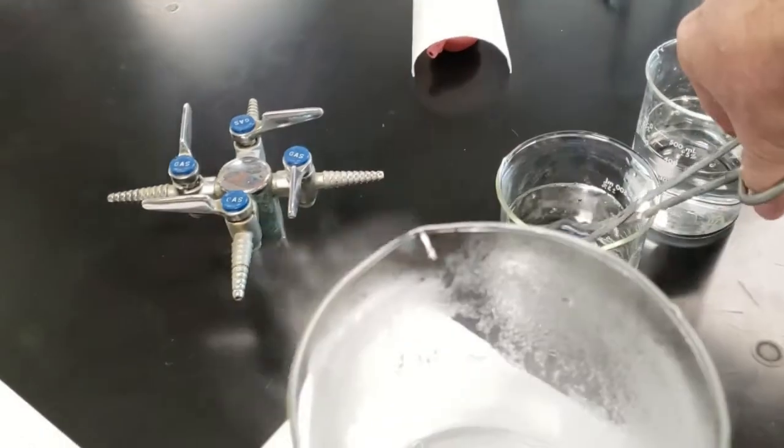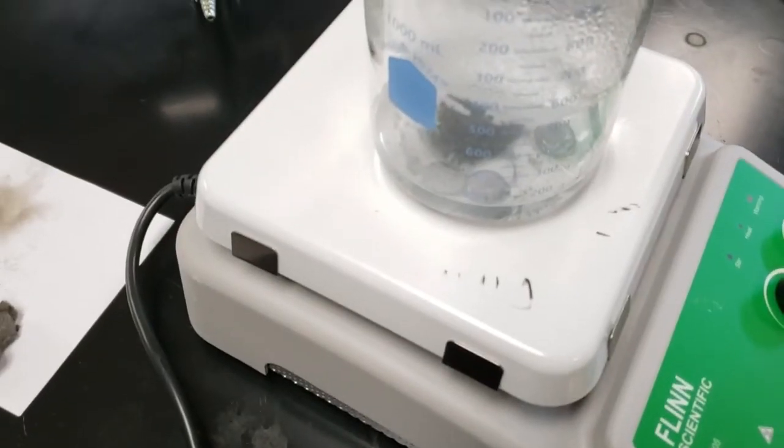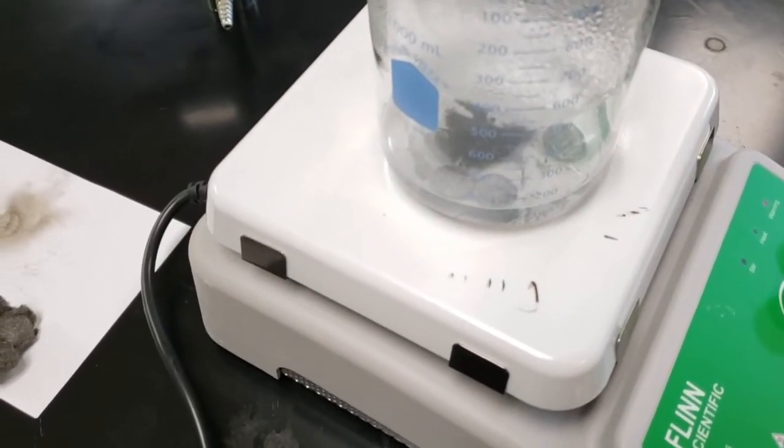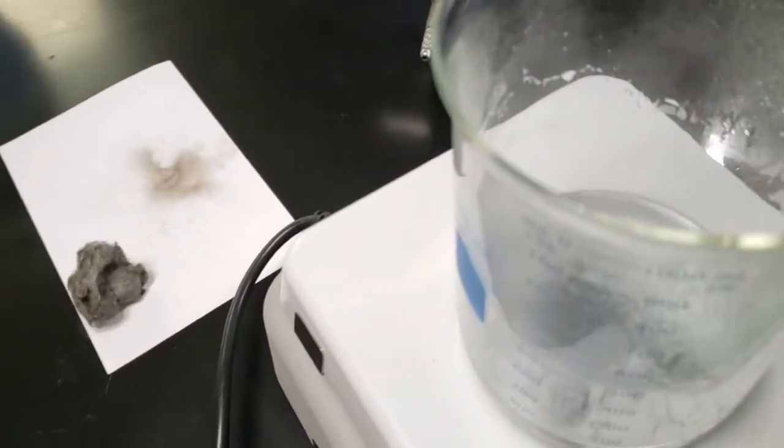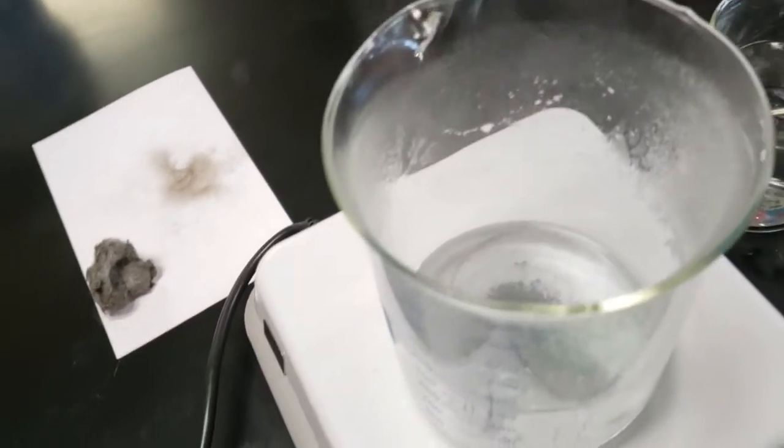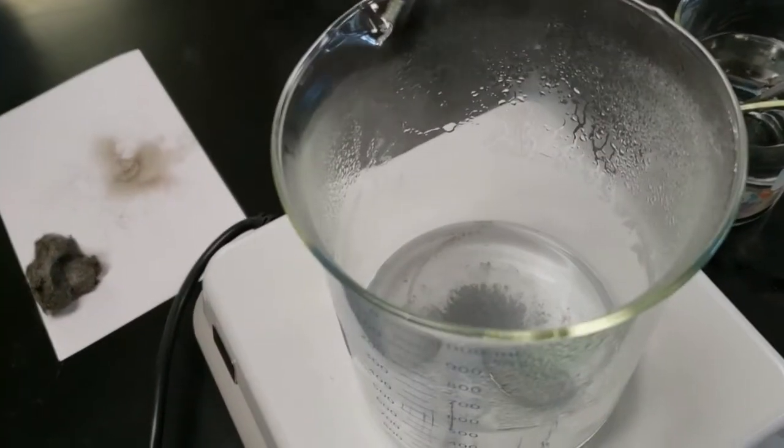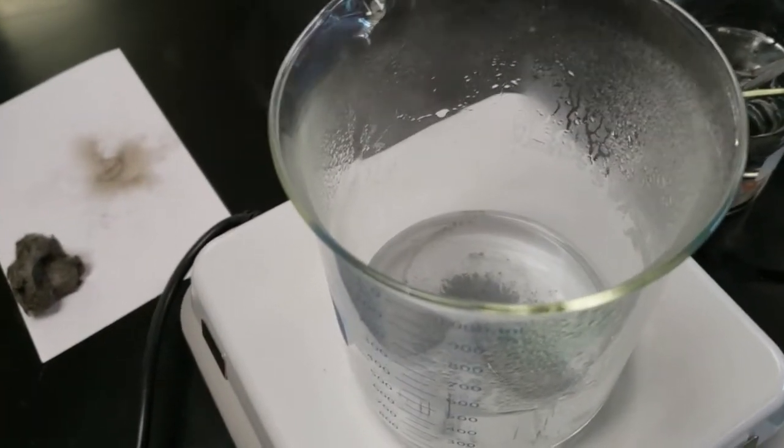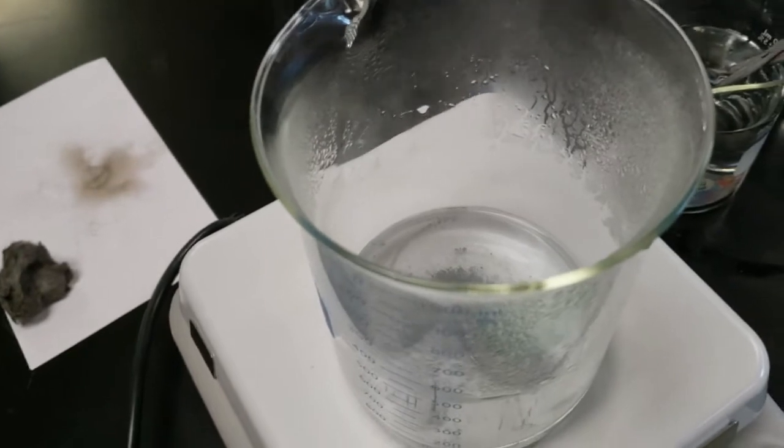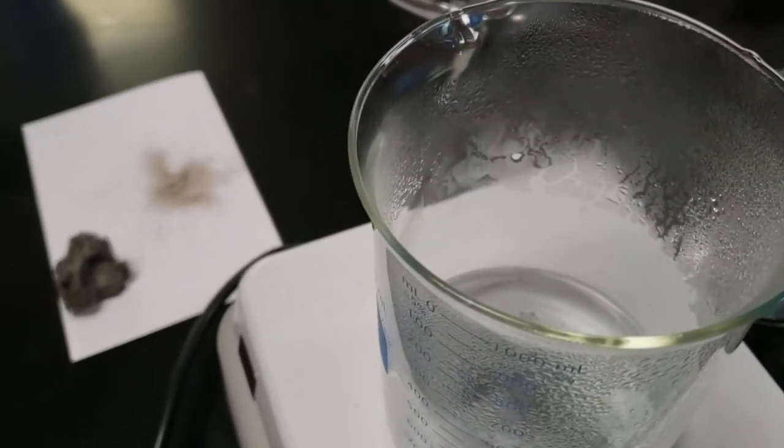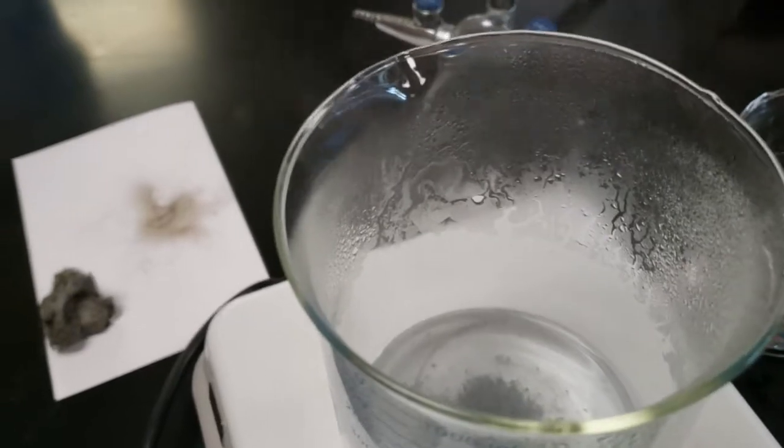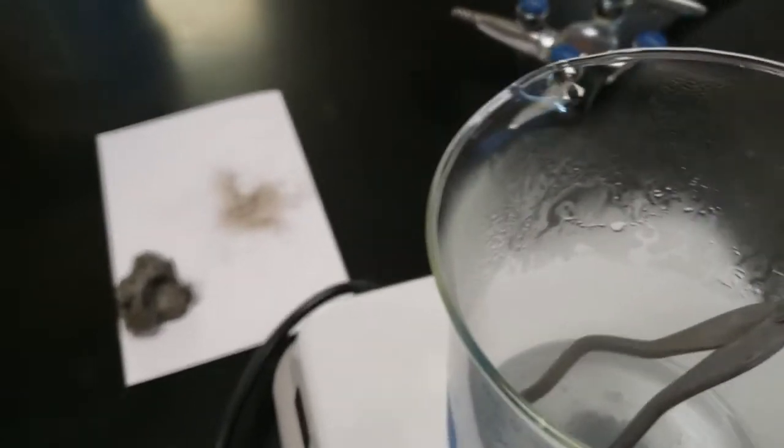You can always give it a little swirl, but go round and round, don't go back and forth. We don't want it to splash out. Now once we have these nice and silver looking, we're gonna use our tongs. I like them curved over and not up. Pick them out one by one.